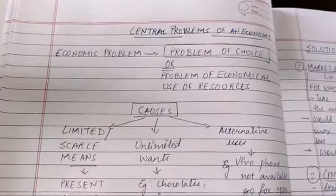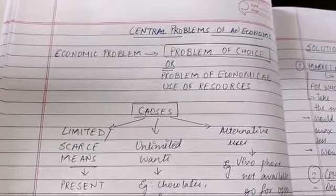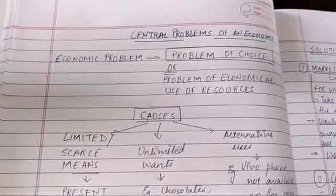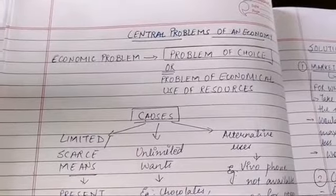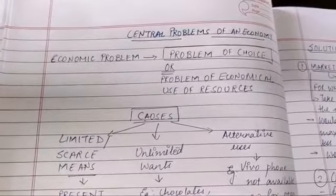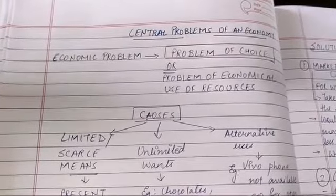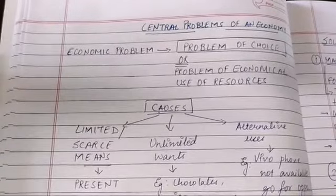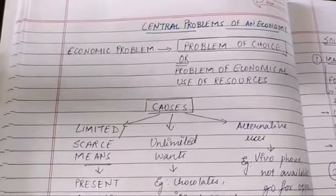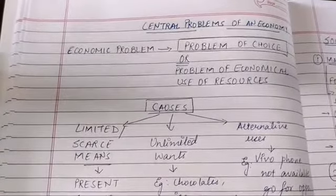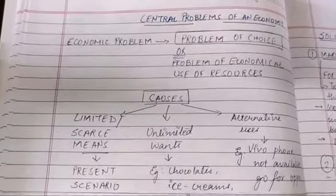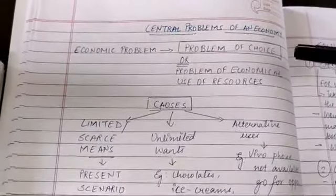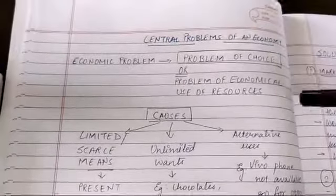Good morning students. As per our last lecture, we have already gone through Chapter 1. Today we are starting Chapter 2, a very small part of it. Chapter 2 is 'Central Problems of an Economy.' Now, what do you mean by economic problem? Economic problem is the problem of choice, or the problem of economical use of resources.